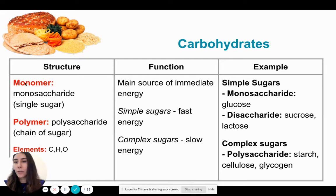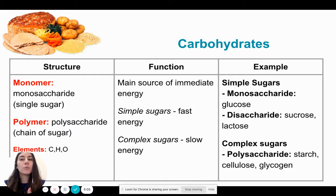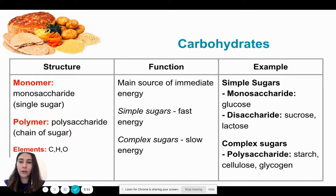A bunch of these sugars will come together to form a polysaccharide. Poly means many, so polysaccharide is a chain of simple sugars. The three elements that make up carbohydrates are carbon, hydrogen, and oxygen.